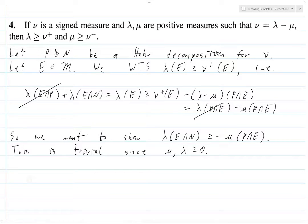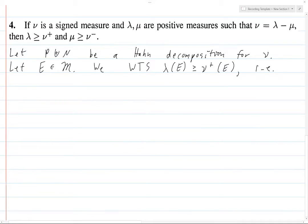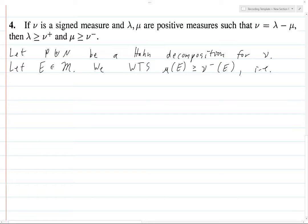Now for the other case, we're going to do something very similar. Instead of wanting to show that λ(E) is greater than or equal to ν⁺(E), what we want to show now is that μ(E) is greater than or equal to μ⁻(E). This means μ(E∩P) + μ(E∩N), which equals μ(E). We want this to be greater than or equal to μ⁻(E).